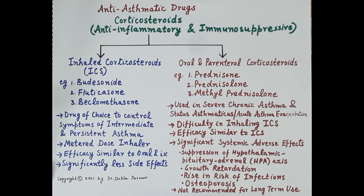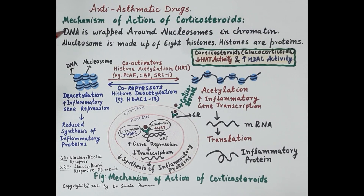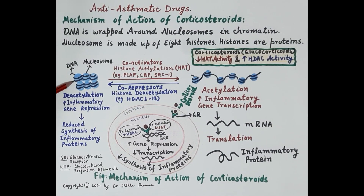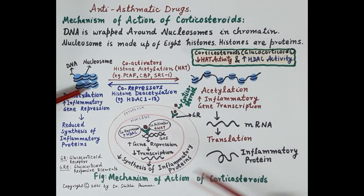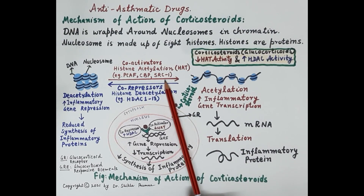Now let's understand the mechanism of action of corticosteroids with the help of diagrams. Corticosteroids are anti-inflammatory; they inhibit synthesis of inflammatory proteins, thereby suppressing inflammation. This figure shows nucleosomes (shown in blue) present in the chromatin. Each nucleosome is made up of eight histones, which are proteins, and DNA is wrapped around the nucleosome.